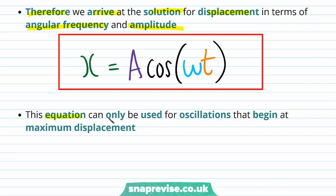It's important to remember that this equation can only be used for oscillations that begin at maximum displacement. So this means that at time t equals 0, the displacement x must be equal to the amplitude a.